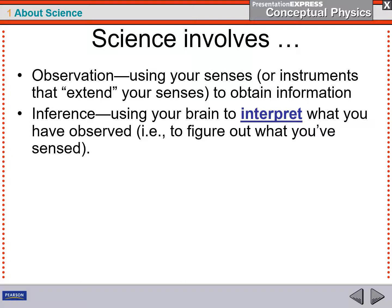Another process that scientists use is the process of inference. And sometimes students get these confused. So let's make the difference clear. An inference means using your brain to interpret what you've observed. In other words, to figure out what it is that you're sensing.